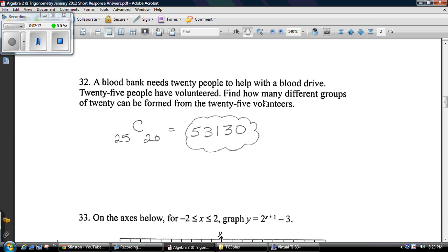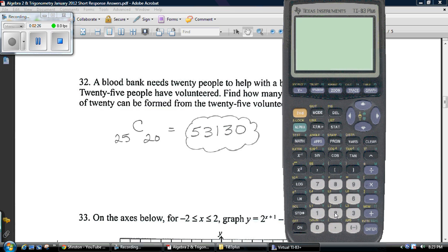32 is a combination problem because it asks you how many different groups of 20 can be formed. Order does not matter. So you just use your calculator, 25C20. You do 25 math, go over to probability, nCr, plug in 20, hit enter, gives you the answer.